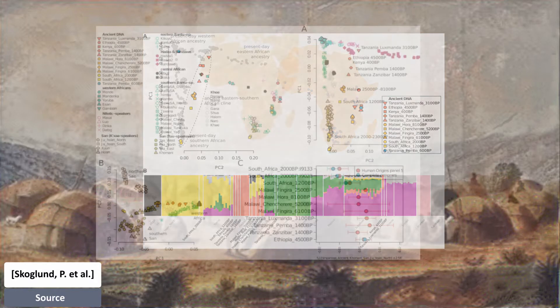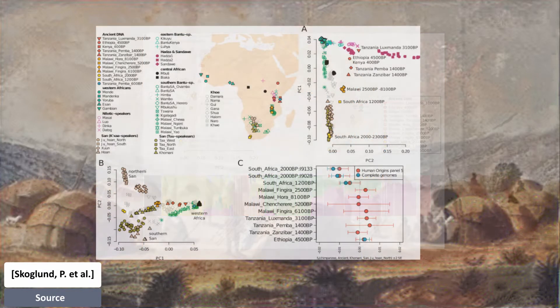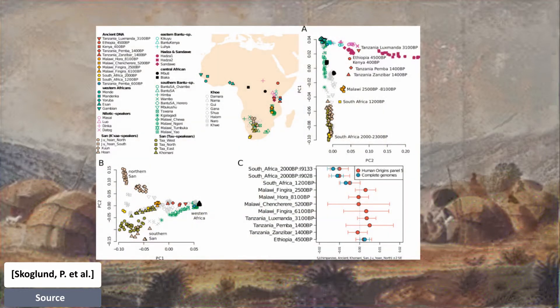Bantu speakers in Eastern Africa have additional ancestry components related to the Nilotic-speaking Dinka and to the ancient Tanzanian pastoralist. Western Eurasian-related ancestry is pervasive in Eastern Africa today, and the timing of this admixture has been estimated to 3,000 years ago. While these findings show that a Levant-Neolithic-related population made a critical contribution to the ancestry of present-day Eastern Africans, present-day Cushitic speakers such as the Somali cannot be fit simply as having ancient Tanzanian pastoralist ancestry.